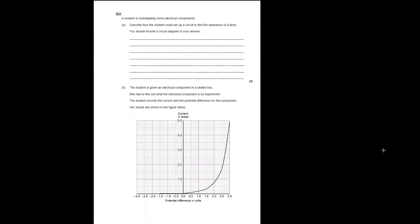Question three is higher paper only — if you're doing the foundation paper you can stop here. Question three: a student is investigating some electrical components. Describe how the student could set up a circuit to find the resistance of a lamp. You should include a circuit diagram in your answer.